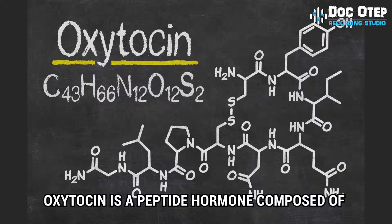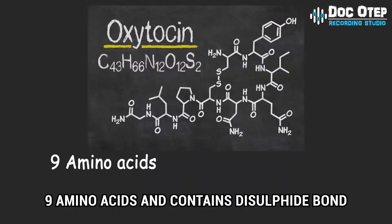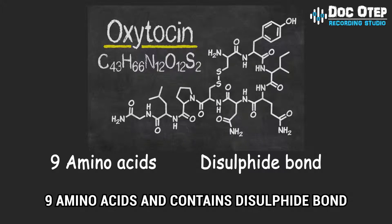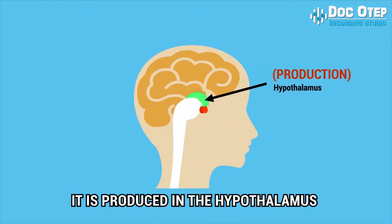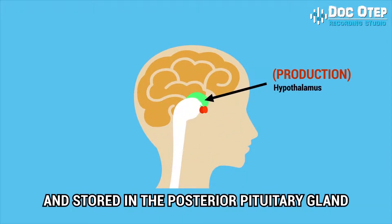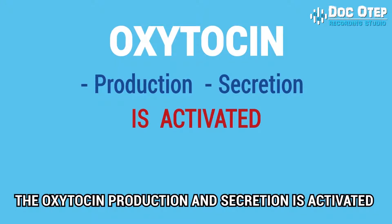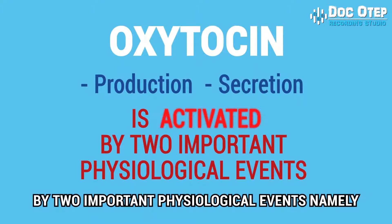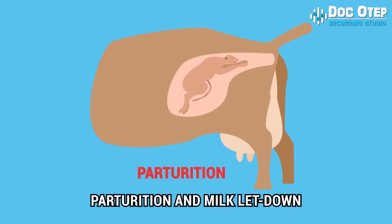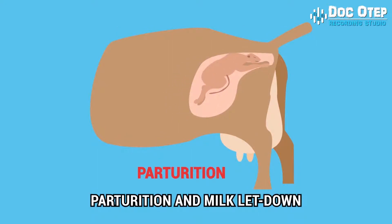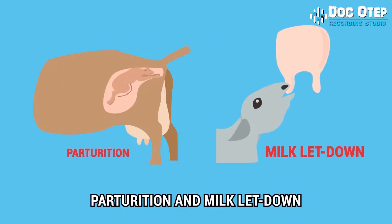Oxytocin is a peptide hormone composed of 9 amino acids and contains a disulfide bond. It is produced in the hypothalamus and stored in the posterior pituitary gland. Oxytocin production and secretion is activated by two important physiological events: parturition and milk letdown.